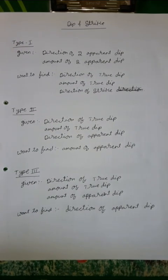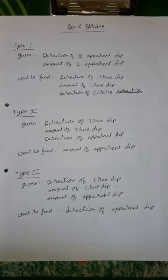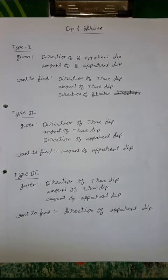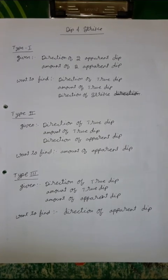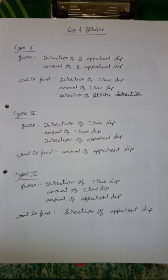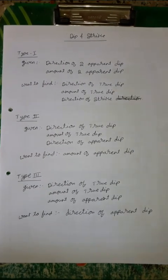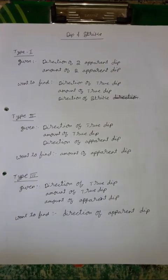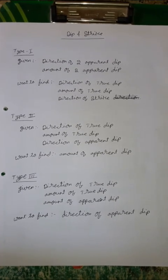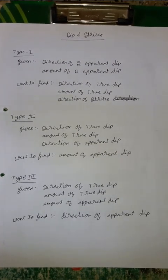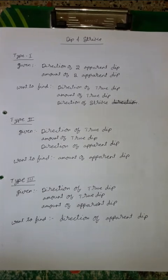I would like to talk about how to solve dip and strike problems in JLG lab. There are three types of dip and strike problems. In the first type, they have given the direction of two apparent dips and the amount of two apparent dips. We want to find the direction of true dip, the amount of true dip, and the direction of strike.